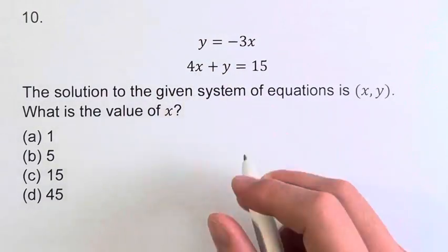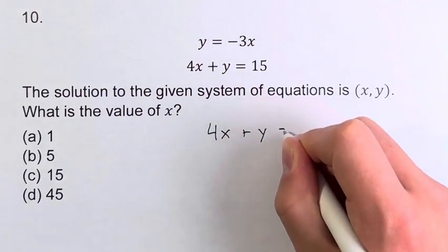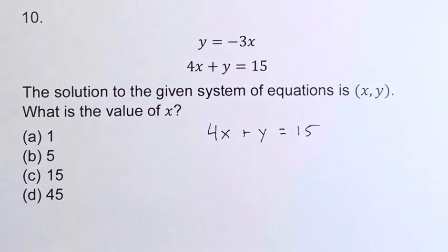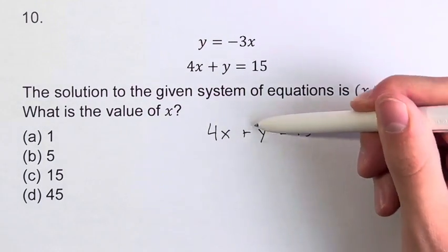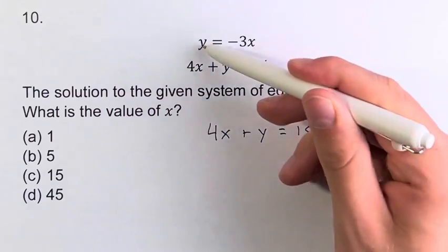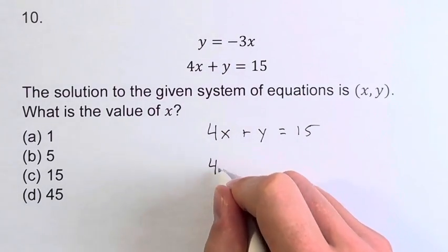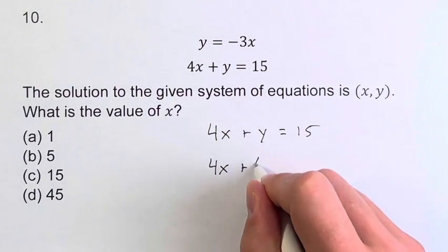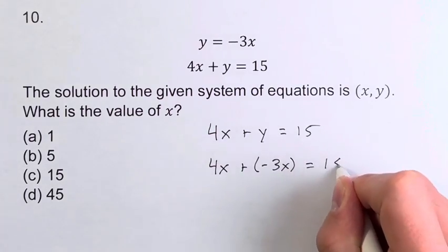Using our other equation, 4x plus y equals 15, we can plug in negative 3x where we see y, since we know that they're equal.